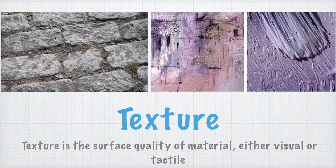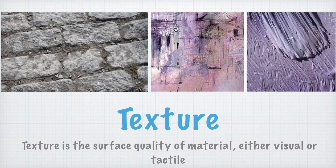Texture is a surface quality of a material. It can be either visual or tactile. Visual texture is a 3D surface imitation, like painting of water, mountains, grass, or trees — it is only an illusion of three-dimensional art. Tactile texture is actual texture, like something rough, silky, or smooth. This actual texture is tactile — we touch it with our hands.